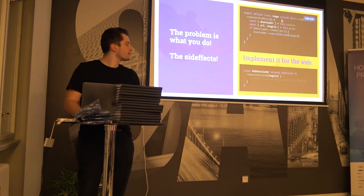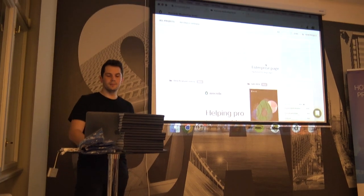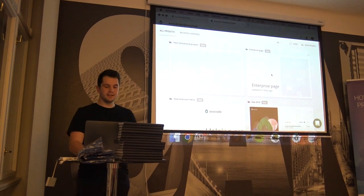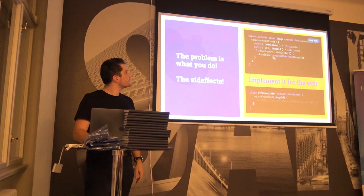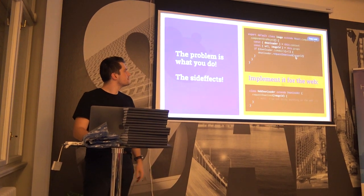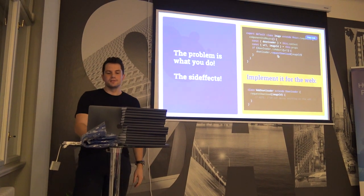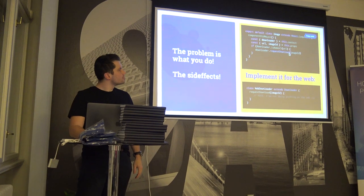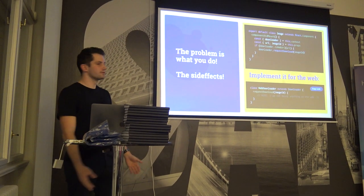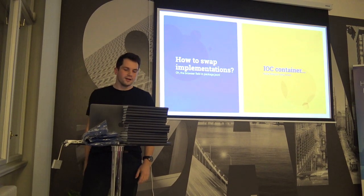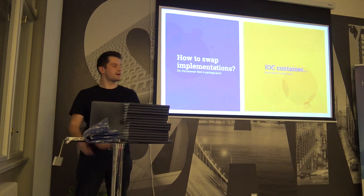We have this image component that does the download flow. When you come to the project manager, the image is rendered. If the image component sees that the URL it receives is a web URL, it will trigger a request to download. Once downloaded, it will receive a local path to the disk. All we need is to make a special implementation of this 'requestDownload' method — and on the web, it just won't do anything, because on the web there will always be a web URL, not a local one.